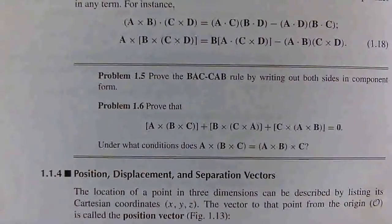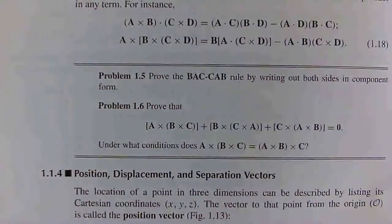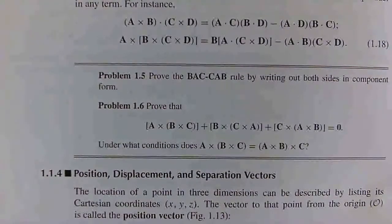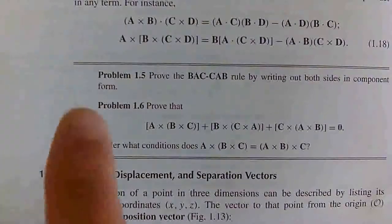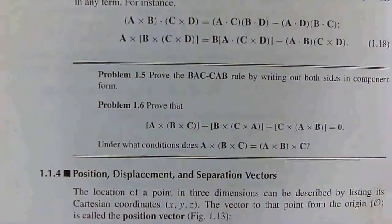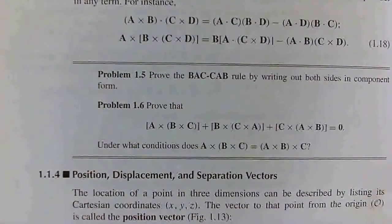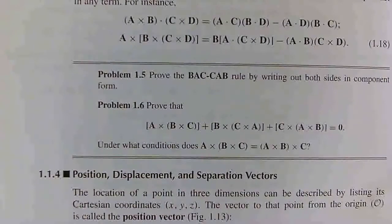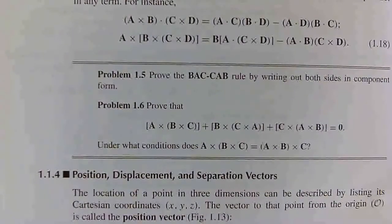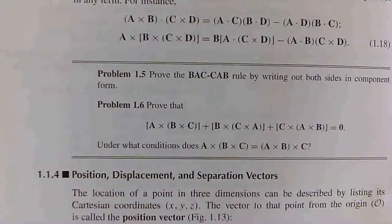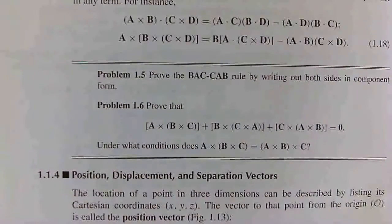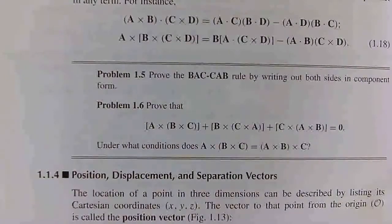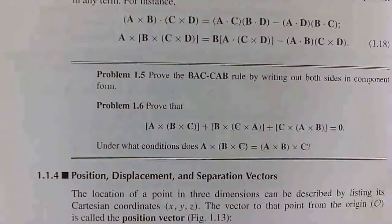Hello everyone, welcome back to the channel. Today we'll be working through problem 1.5 from Griffith's Introduction to Electrodynamics. It says: prove the BAC minus CAB rule by writing out both sides in component form.